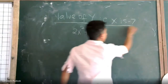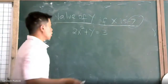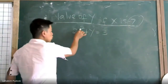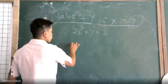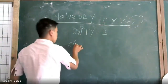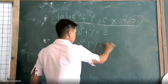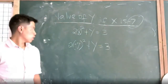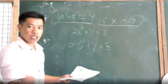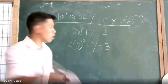For example, find the value of y if the value of x is negative 7. You just substitute the value of x: 2 times negative 7 raised to the power of 2, plus y, is equal to 3. Now there is already one variable left — x has been substituted by negative 7, so we can now solve for y.